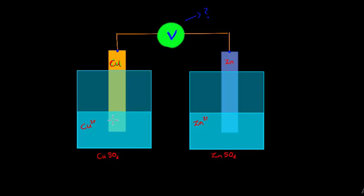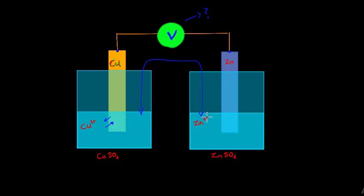Why no reading? The half-reactions at each electrode are reversible reactions. The moment electrons are drawn from the copper system, electrons will be donated back because the solution becomes negatively charged and repels the electrons again. The reversible reaction occurs almost immediately, so there's no net exchange of electrons. Before we can go further, we need to donate more charge into the system using a salt bridge.